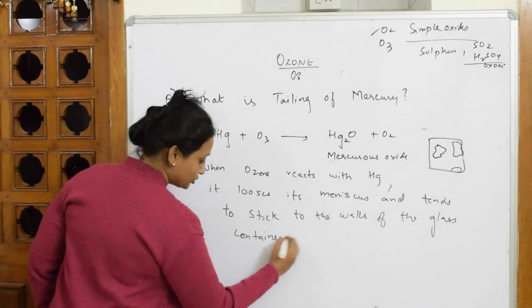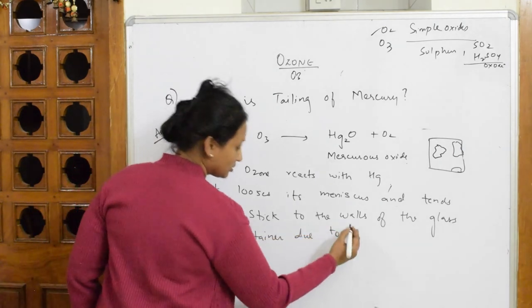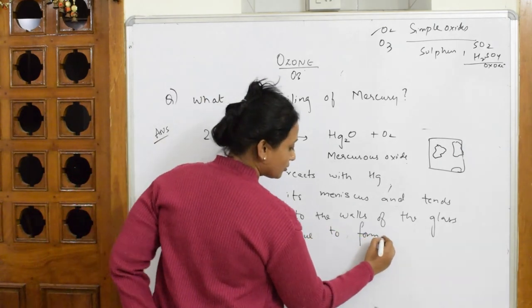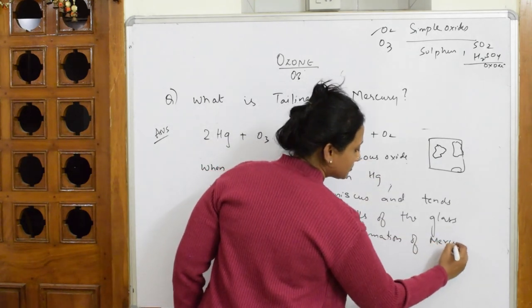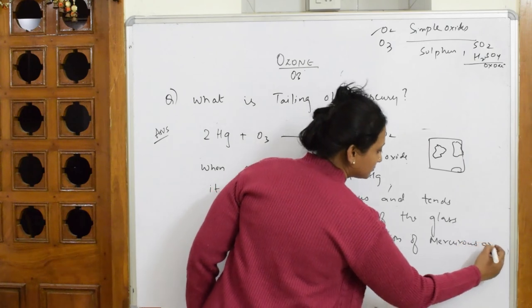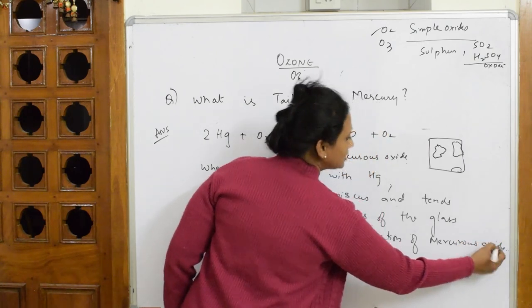This happens due to formation of mercurous oxide. That's it. This is called tailing of mercury.